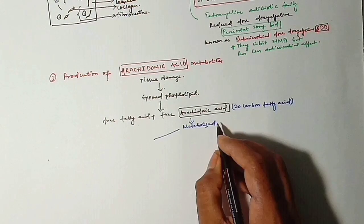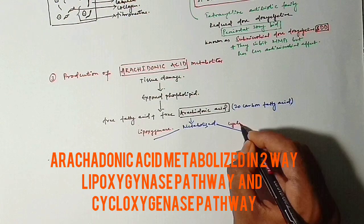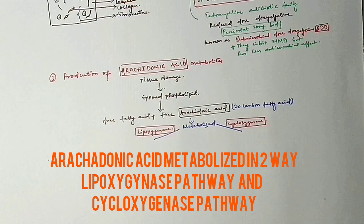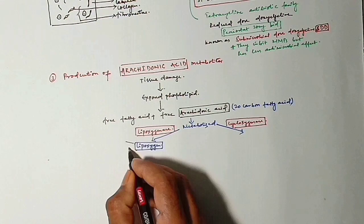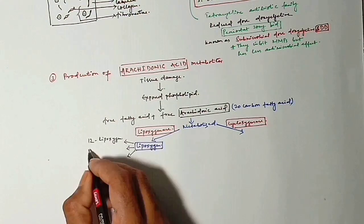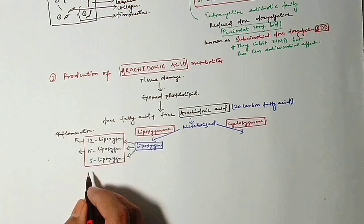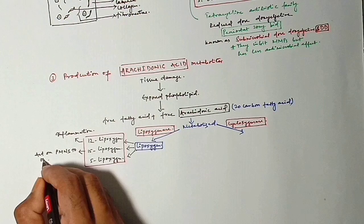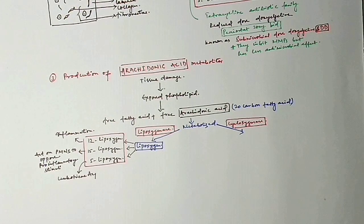One is lipoxygenase pathway and second is cyclooxygenase pathway. Lipoxygenase pathway will produce lipoxidase, which will eventually lead to 12 lipoxygenase, 15 lipoxygenase and 5 lipoxygenase. 12 lipoxygenase will promote inflammation. 15 lipoxygenase will act on PMNs to oppose the pro-inflammatory stimulus. And 5 lipoxygenase will lead to leukotriene A4.